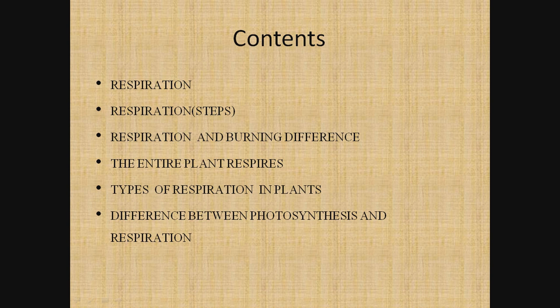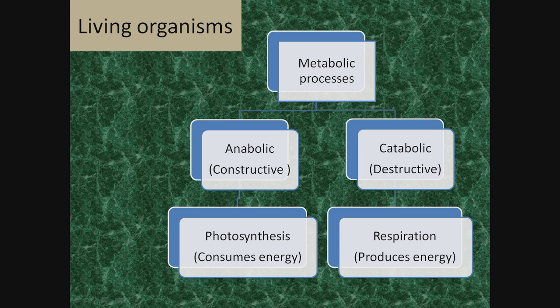All living organisms have different metabolic processes going on inside their body. These metabolic processes can be divided into two types: anabolic processes and catabolic processes. Anabolic processes are constructive processes in which something is produced. An example is photosynthesis — in the presence of sunlight, carbon dioxide and water, starch or glucose is produced, so it is an anabolic process.